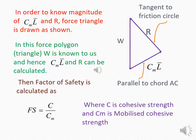In the force polygon, W is known, and hence C_m L and R can be calculated. The factor of safety is then calculated as C divided by C_m, where C is the cohesive strength of the soil and C_m is the mobilized cohesive strength required.